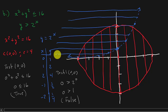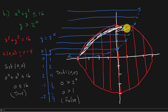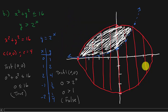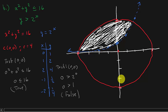The answer is where the graphs overlap. The final solution is the region inside the circle that is also above the exponential curve. You can erase the other shaded regions to show just the intersection.